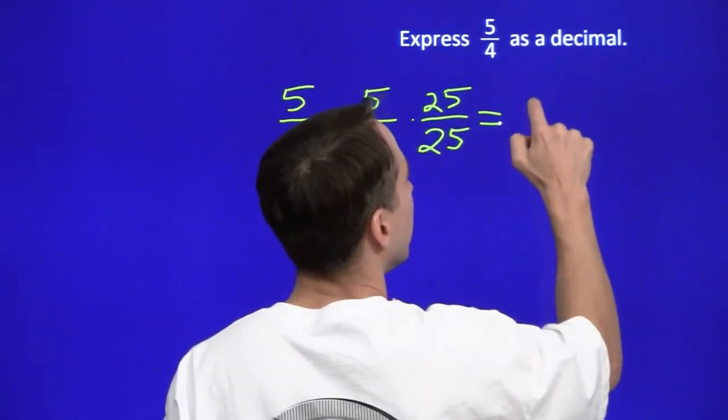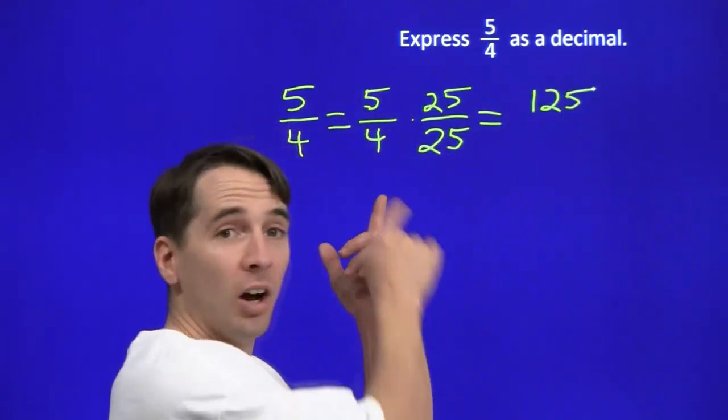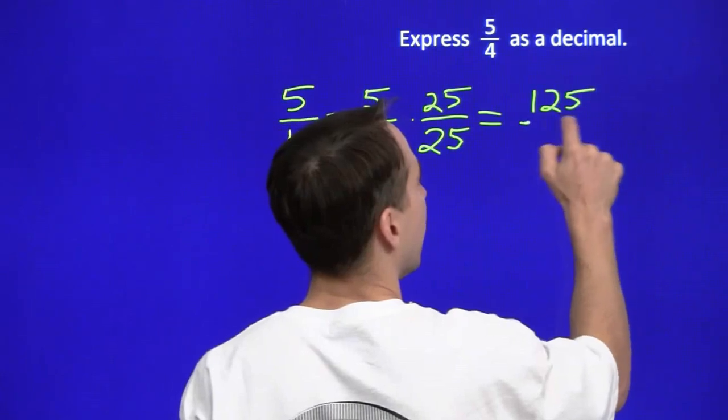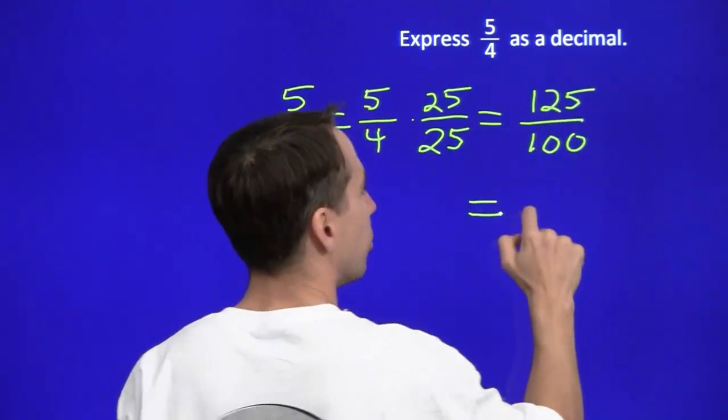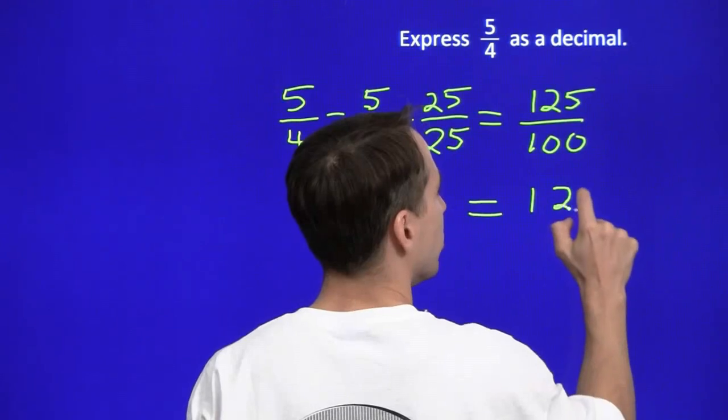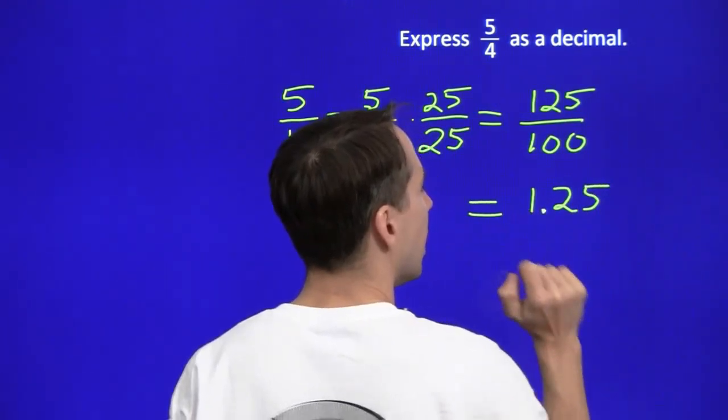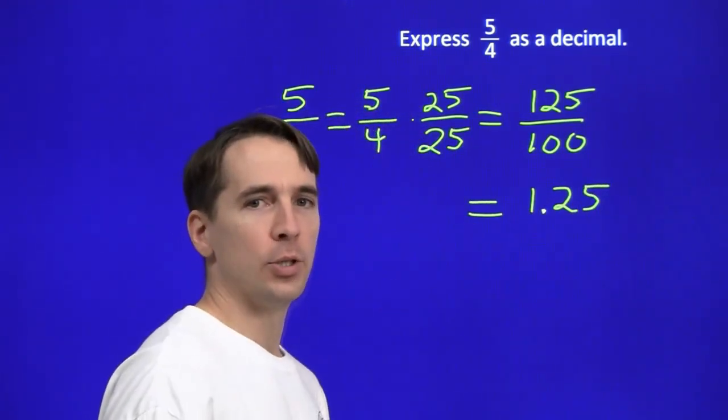We're going to multiply by 25 over 25. That'll make our numerator 5 times 25 is 125. Our denominator is 4 times 25. There's that power of 10. It's 100. So 125 divided by 100, we start with 125. Move the decimal point two places to the left and we get 1.25.